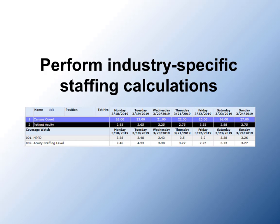ScheduleAnywhere can help perform industry-specific staffing calculations. Take healthcare for example. If you enter the number of patients you need to care for in a day into a requirement row, ScheduleAnywhere can calculate the number of hours per patient day, or HPPD, in the coverage watch. This is done by dividing the number of hours scheduled by the number of patients. The calculation can be performed by day, shift, or day part.